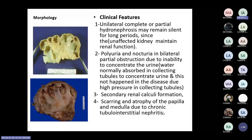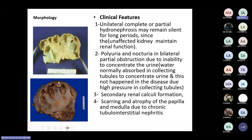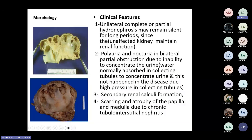Morphologically, there is progressive dilatation of the pelvicalyceal system with thin cortex and medulla at the periphery. There are chances of repeated inflammation and infection, signs of hemorrhage, and sometimes stone formation. In advanced cases, you cannot identify this as a kidney — just a dilated calyceal system. On microscopy, you may find atrophied nephrons and atrophied glomeruli.